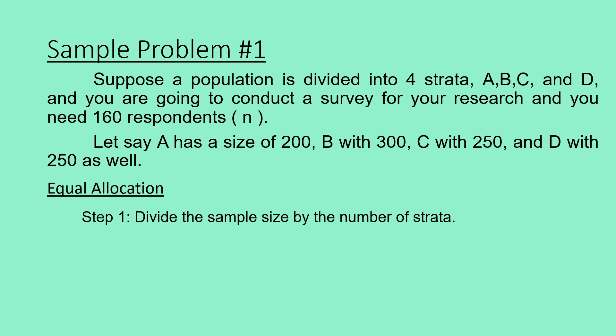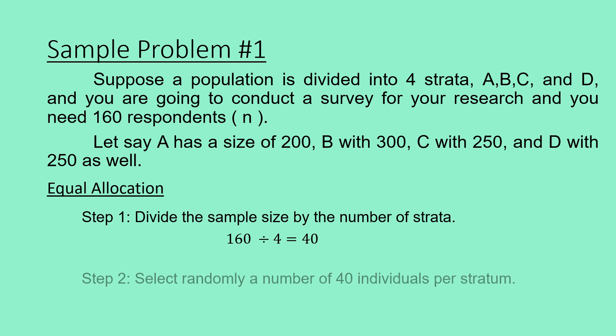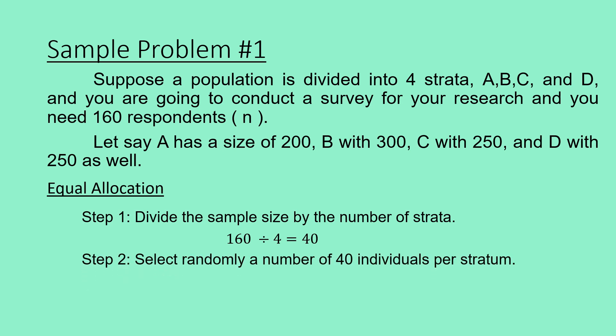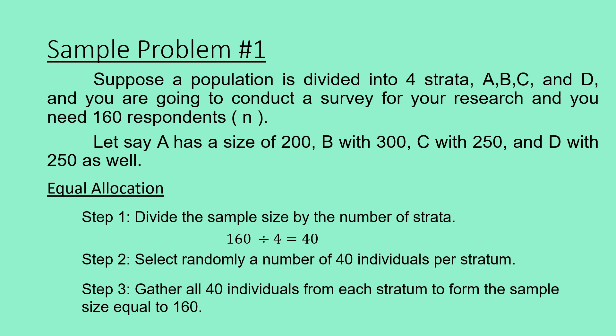Step 1: Divide the sample size by the number of strata. Our sample size is 160 respondents and our number of strata is 4 — A, B, C, and D. So, 160 divided by 4 equals 40. Step 2: Select randomly 40 individuals per stratum, because in equal allocation the number of individuals per stratum to be part of the sample are equal. Step 3: Gather all 40 individuals from each stratum to form the sample size equal to 160. This is how we do stratified sampling using equal allocation.